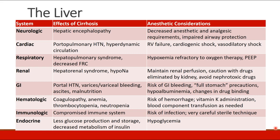In the respiratory system, patients with cirrhosis may have hepatopulmonary syndrome and decreased FRC due to accumulation of ascites. These patients may have hypoxemia refractory to oxygen therapy or PEEP. In the renal system, patients may have hepatorenal syndrome or hyponatremia. It is important to maintain renal perfusion, use caution when administering drugs eliminated by the kidney, and avoid nephrotoxic drugs.